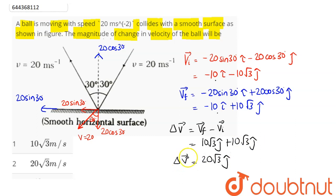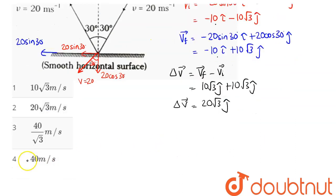Hence, the magnitude of change in velocity is 20 root 3 meter per second, which is option number 2. Hence, 2 is the correct answer.